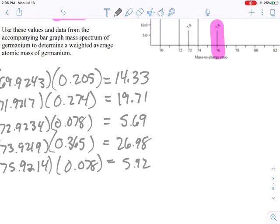That's each of the isotopes. Now we add them all up to get our total weighted average. And we end up with 72.63.